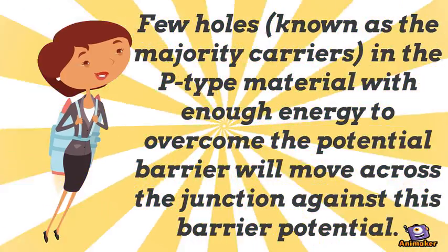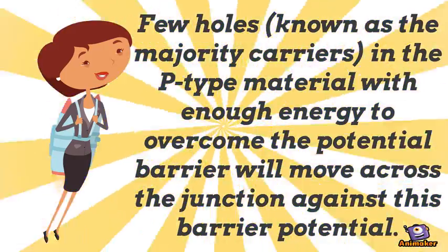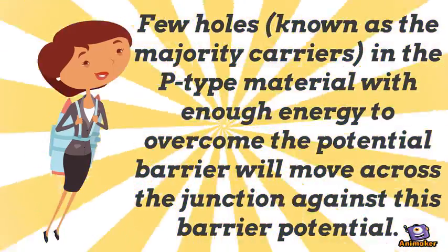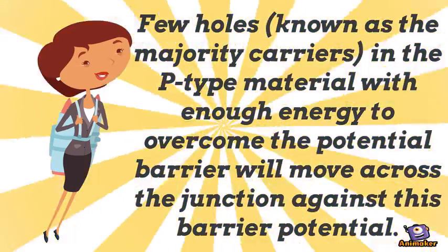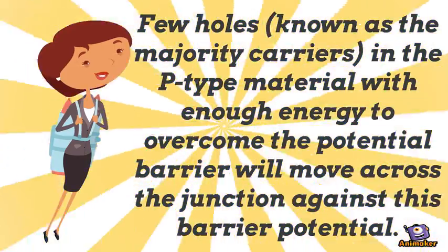At this condition, few holes, known as the majority carriers in the P-type material with enough energy to overcome the potential barrier that exists in the space charge region, will move across the junction against this barrier potential.